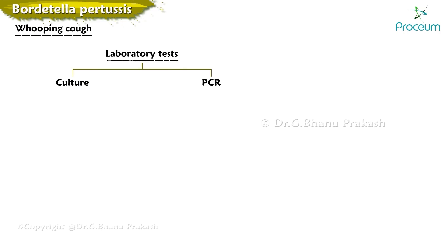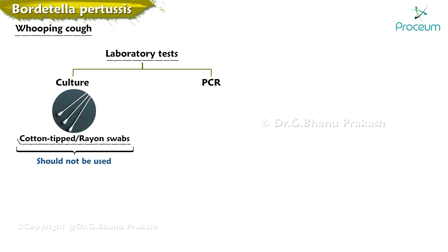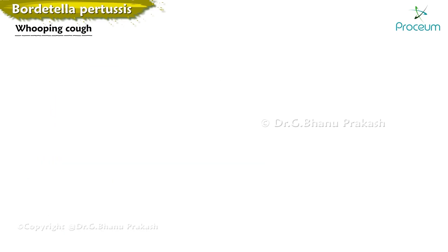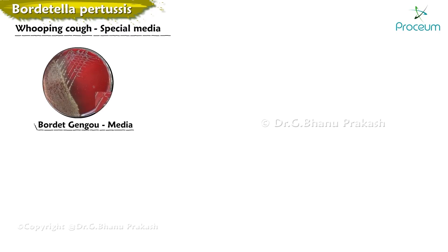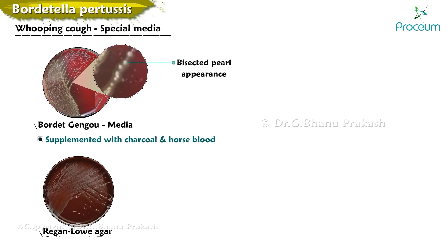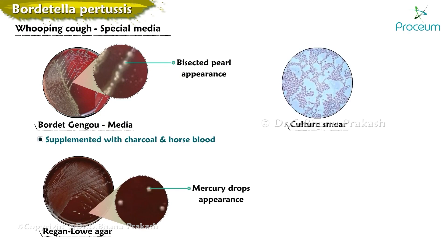Specimens must be collected by swab from the posterior nasopharynx rather than the anterior nares or throat. Cotton-tipped or rayon swabs should not be used for culture specimens as they contain fatty acids toxic to Bordetella pertussis; instead, calcium alginate or polyester (Dacron) swabs with a flexible metal shaft should be used. For PCR, polyester or rayon swabs are appropriate. Special media such as Bordet-Gengou agar (supplemented with charcoal and horse blood) and Regan-Lowe agar optimize bacterial growth. Culture on Bordet-Gengou media shows a bisected pearl appearance; on Regan-Lowe medium, mercury drop appearance; and culture smear shows a thumbprint appearance.